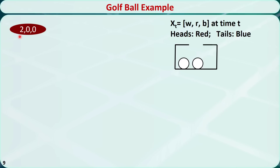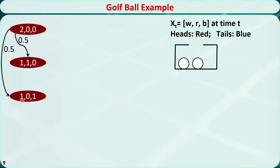Now let's pick a ball randomly — it must be a white ball. Then flip a coin. If heads, paint the ball red: the number of white balls reduces by 1 and red balls increases by 1, ending in state (1, 1, 0). The transition probability is 0.5. If tails, paint the ball blue: white balls reduce by 1 and blue balls increase by 1, ending in state (1, 0, 1). The transition probability is 0.5.